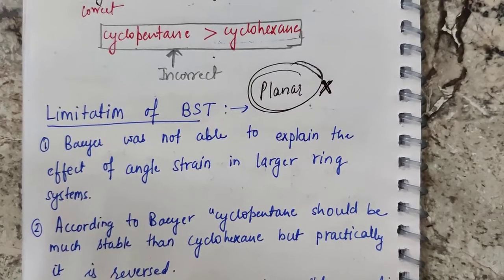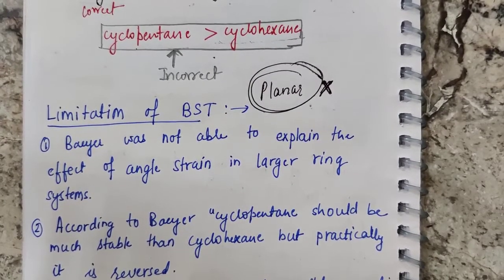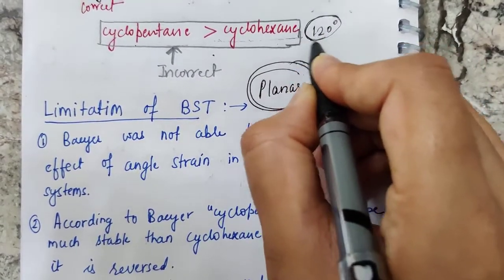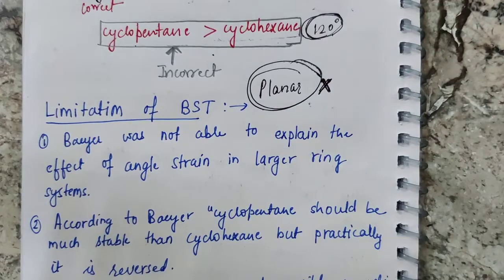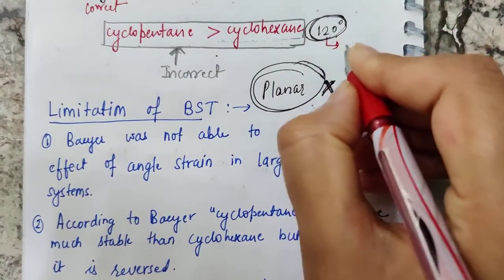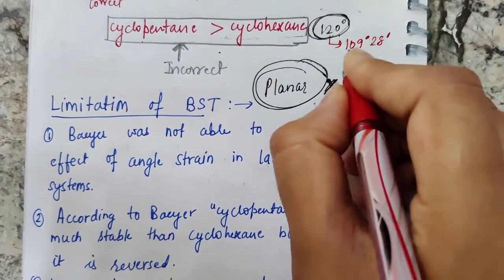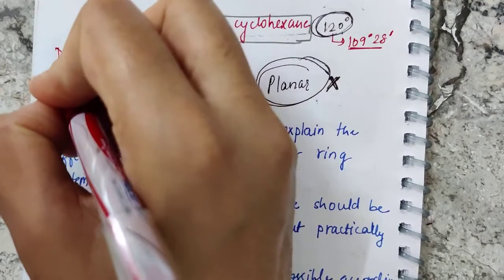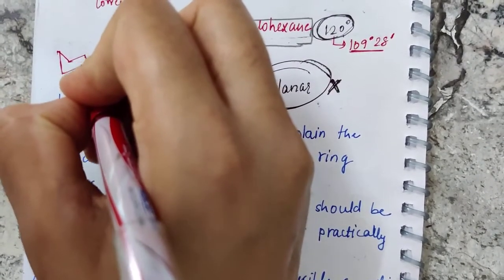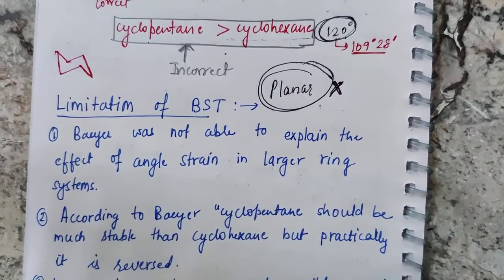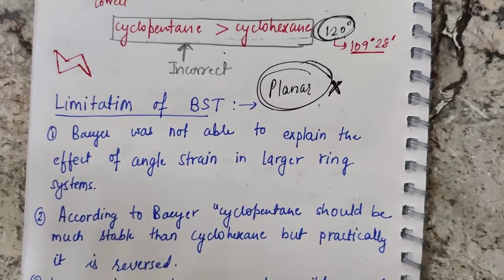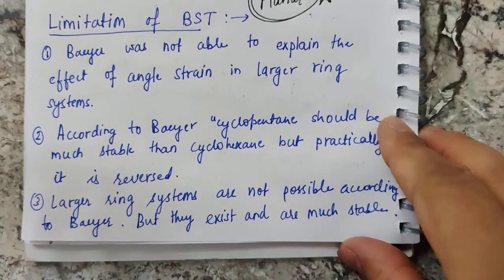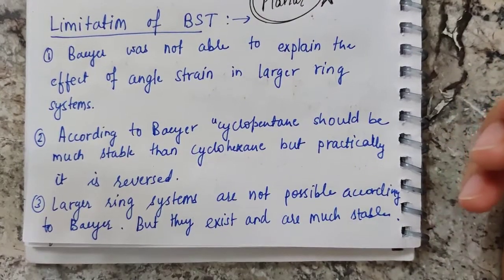Higher rings like cyclohexane, cycloheptane, and cyclooctane do not exist in a planar form — they exist in a puckered form. Because of this, they convert their bond angles. For example, cyclohexane appears to have a bond angle of 120° in the planar assumption, but in reality it has a bond angle of 109° 28', because it exists in the chair conformation.